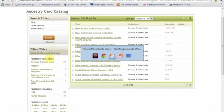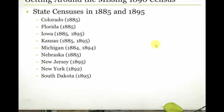Here's a quick review of the state censuses that are available, digitized, and online: Colorado for 1885, Florida for 1885, Iowa for 1885 and 1895, Kansas for 1885 and 1895, Michigan with the odd years 1884 and 1894, Nebraska in 1885, New Jersey in 1895, New York in 1892, and South Dakota in 1895. So if your ancestors came from or passed through any of those states in the 1880s or 1890s, this is a really great resource.